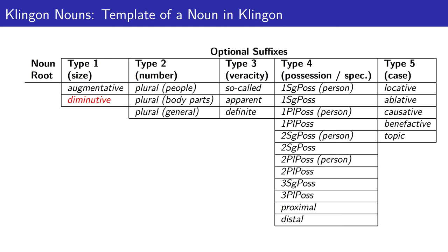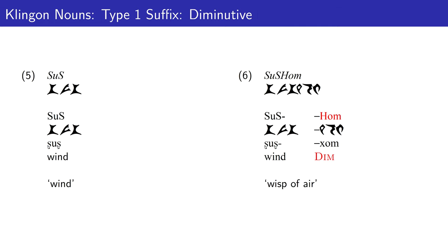Alternatively, a type 1 suffix could mark the noun as diminutive or small. Example 6 shows 'shosh-hom', or wisp of air — a small wind. 'Hom' is the marker for diminutive.